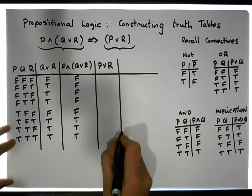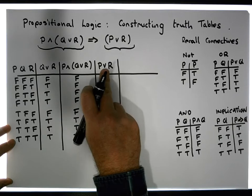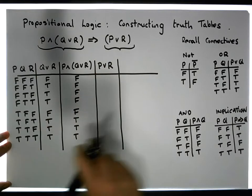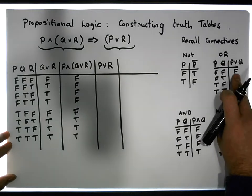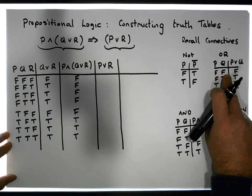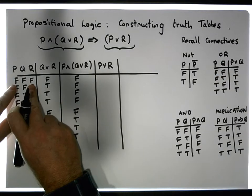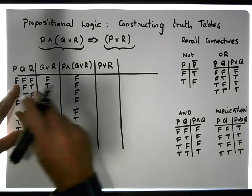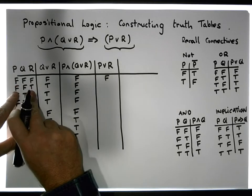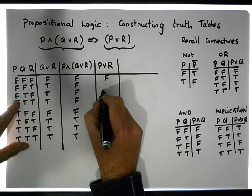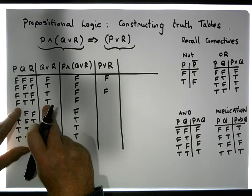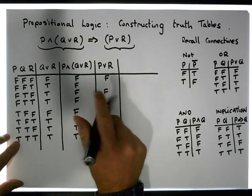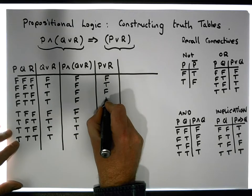The P OR r OR column is the ORing of the P column with the r OR column. An OR is only ever false when both inputs are simultaneously false, so we're looking down these two columns for two false values. There are two false values here, not there, there is here, not here, not there, not there, neither there, neither there. So those are the only false values — everywhere else must be true.